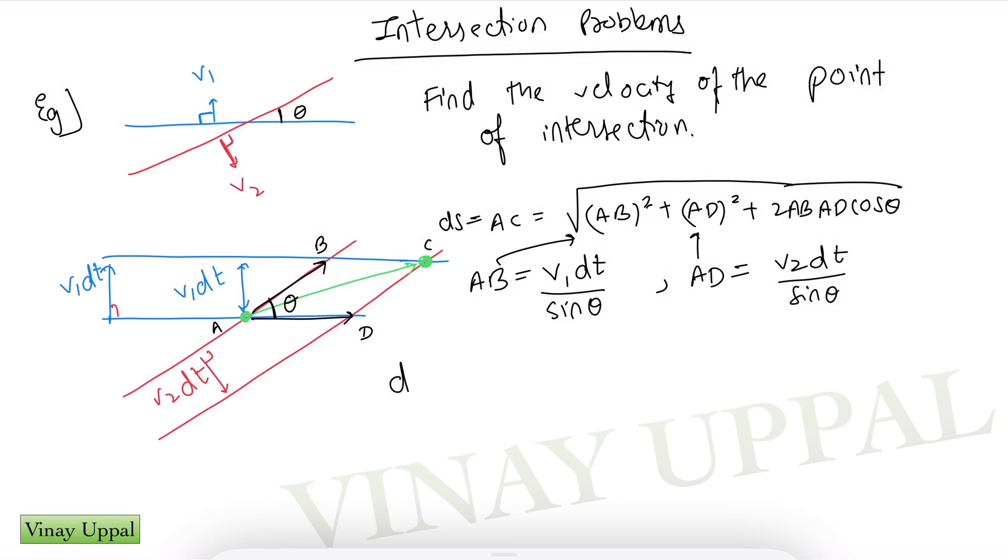Therefore my displacement ds which is AC would come out to be square root of v1 squared plus v2 squared plus 2 v1 v2 cos theta. Let me take dt as common outside, dt by sin theta is common.